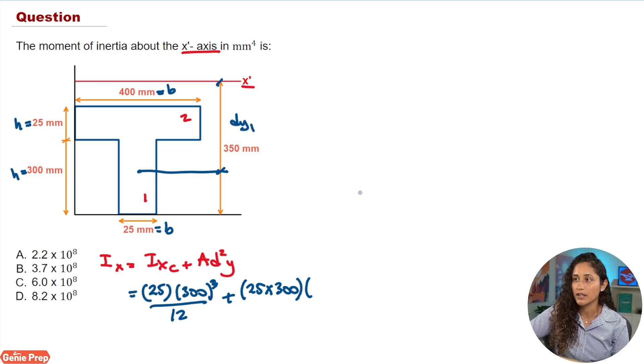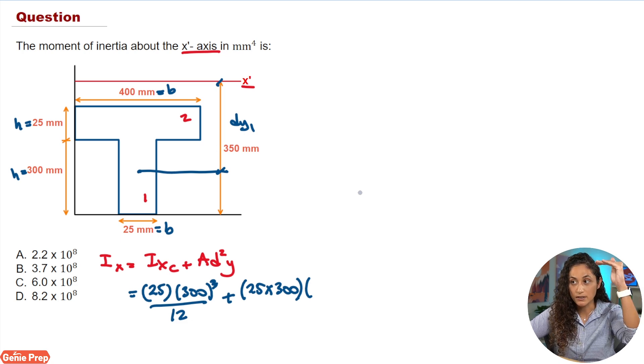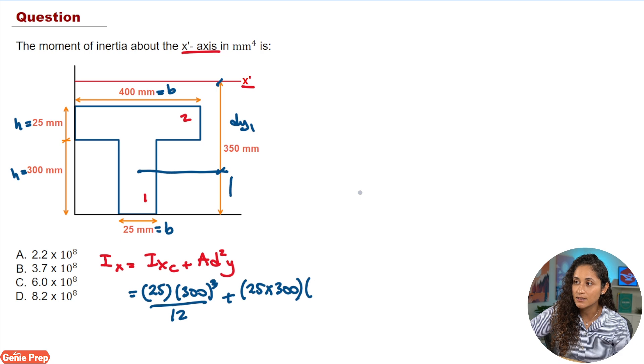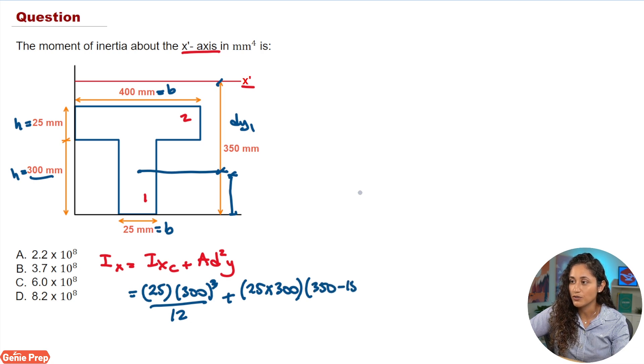So what we can do here is take 350, because that's where X prime is, and then subtract this distance here. And this distance is just going to be half of 300, which is 150. So we can do here 350 minus 150. And then don't forget to square this term. So this is going to be DY.